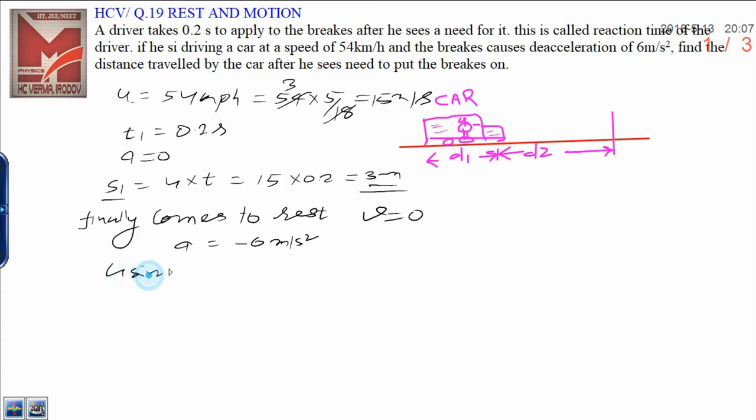Using v squared minus u squared equals 2as, v is 0. What is u? Let us see, that is 15. Square of 15 is equal to 2, acceleration is minus 6, into I can write it as 2. This is s2.